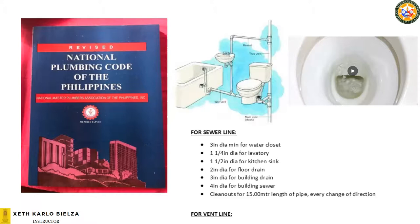The house drain minimum, as stated by the code, is 3 inches. And the house sewer is 4 inches minimum diameter. The difference between the house drain and the house sewer was discussed in CE 1½, Engineering Utilities 2.